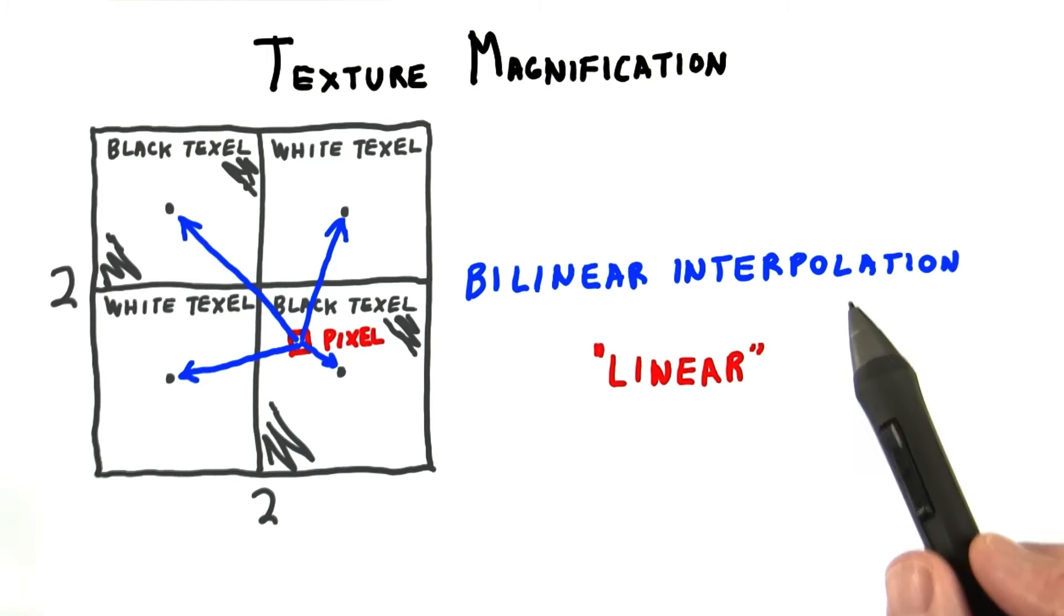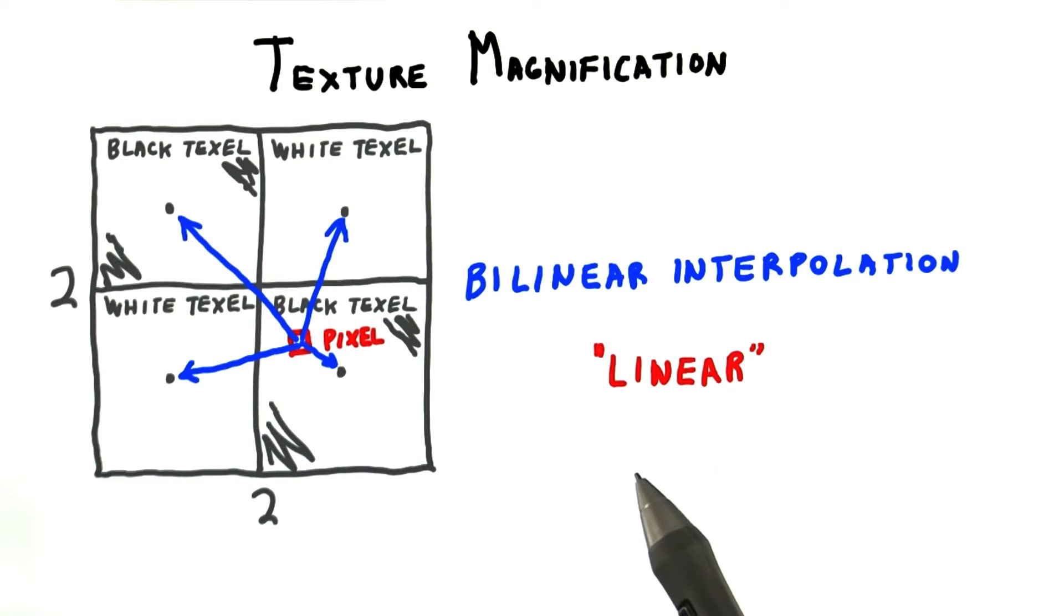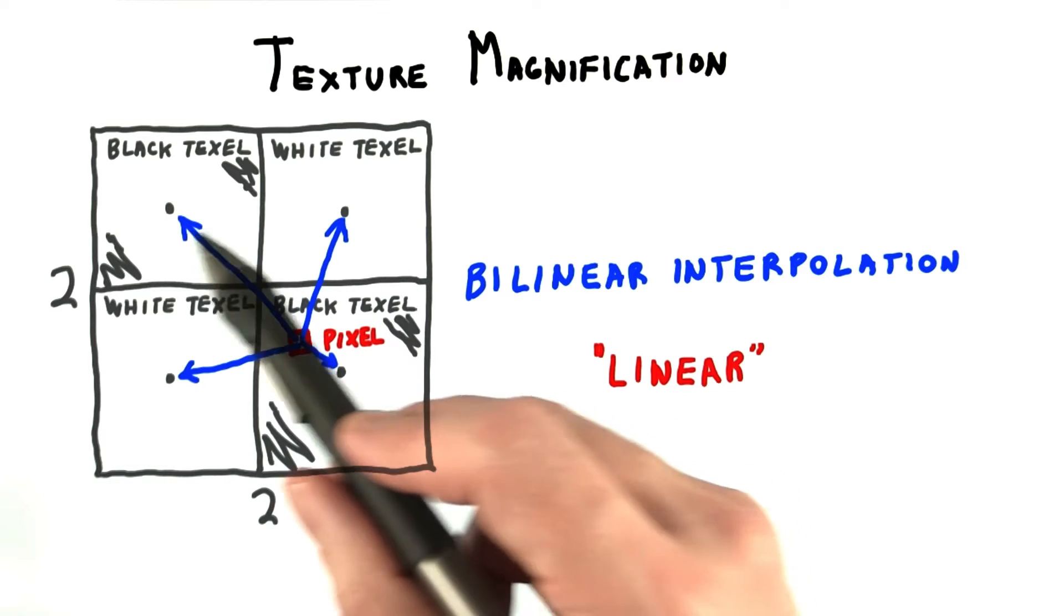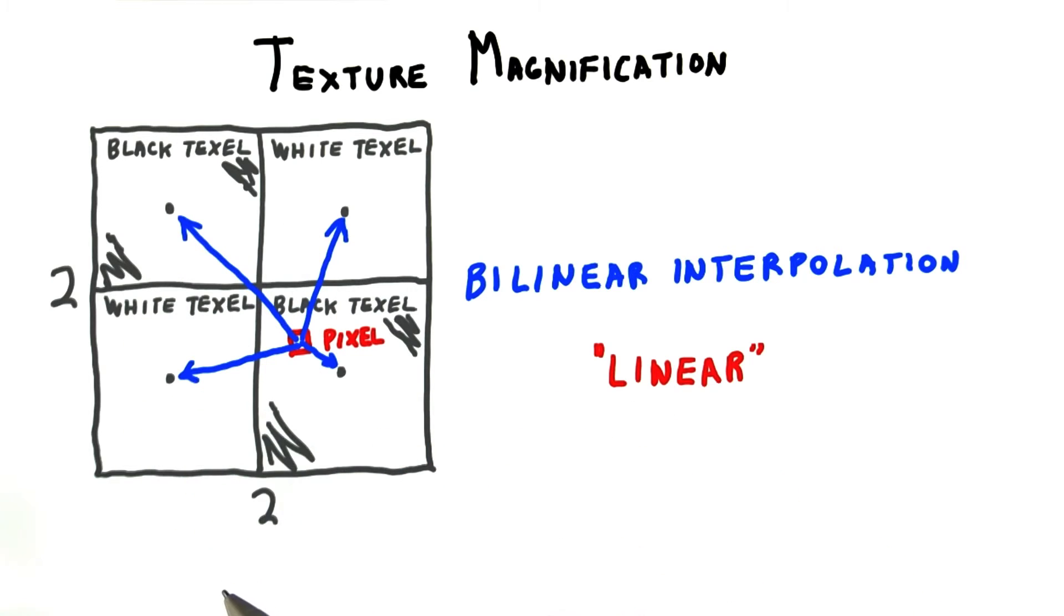The other option is bilinear interpolation, or linear for short. What this mode does is takes the four closest texel centers and interpolates among them. The closer the pixel is to the texel center, the more of that color you get.